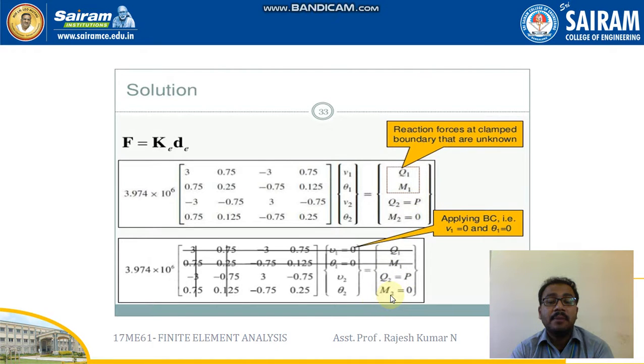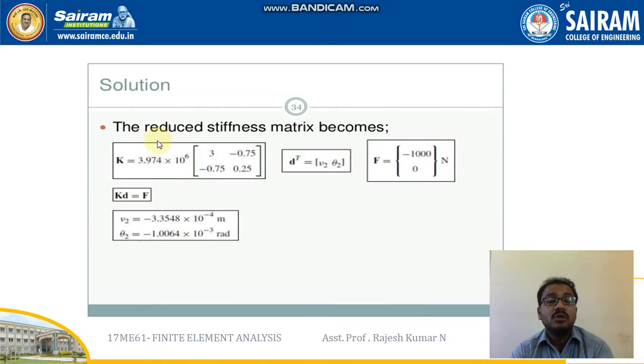Moving to this one. At node 2 there is a point load applied towards negative direction, so here f2 I'll be showing it as p. And m2 value I do not know, so I'll be, time being, writing as m2. Ultimately I'll be finding out v2 and theta 2.